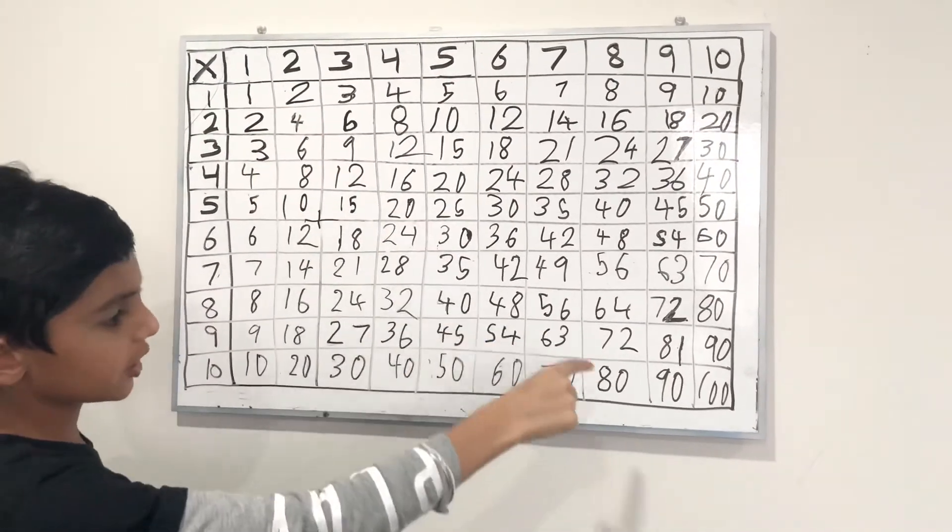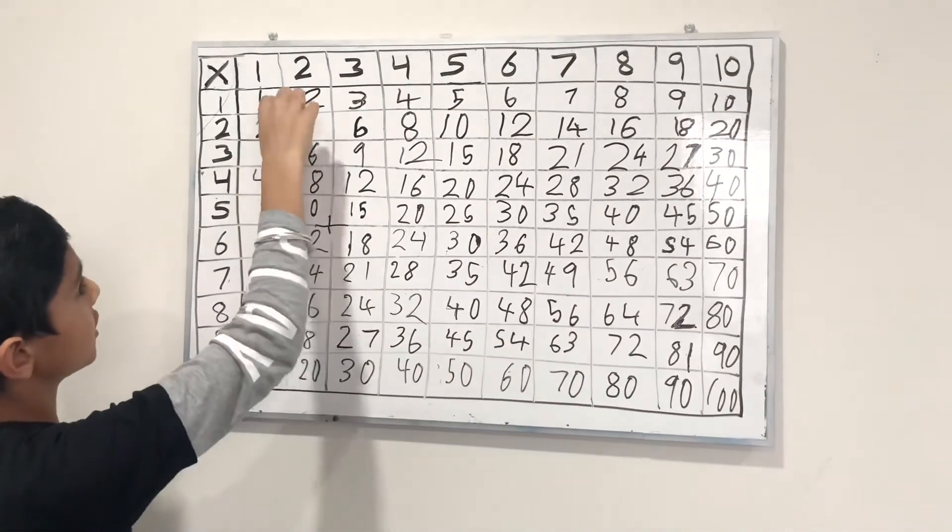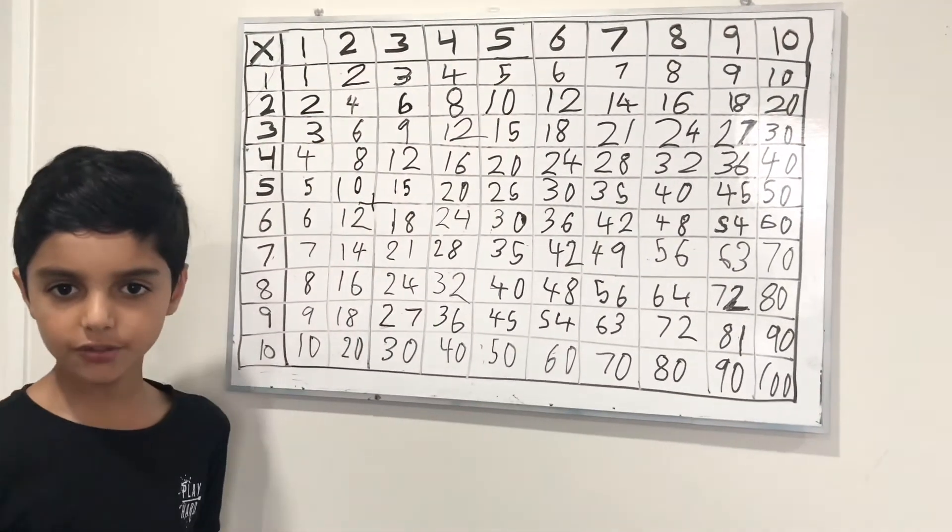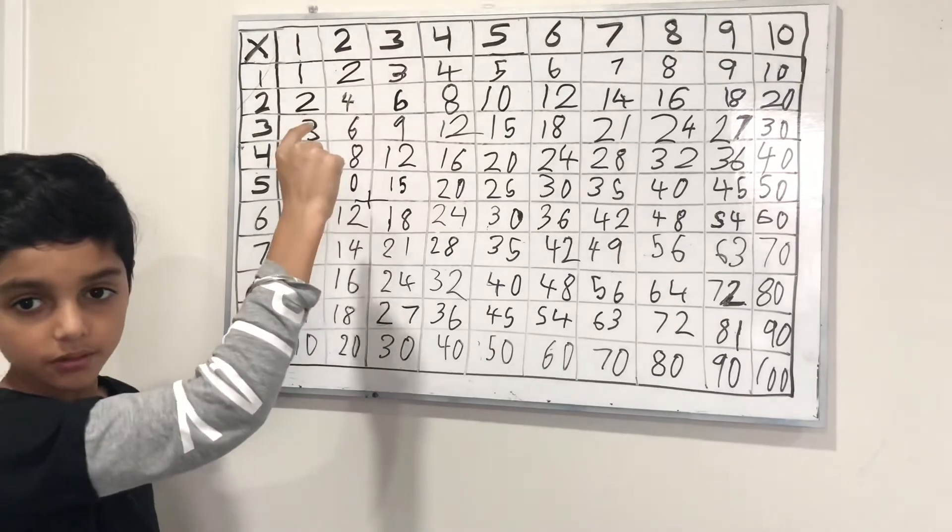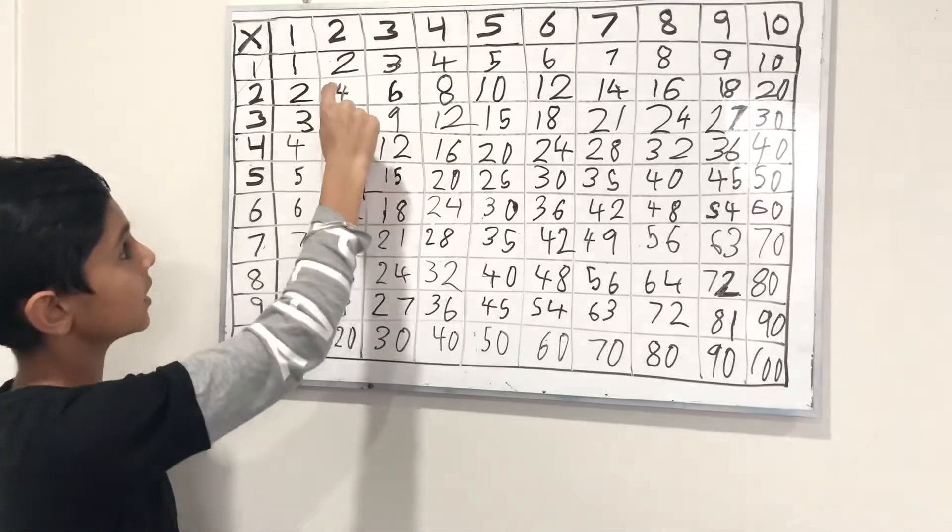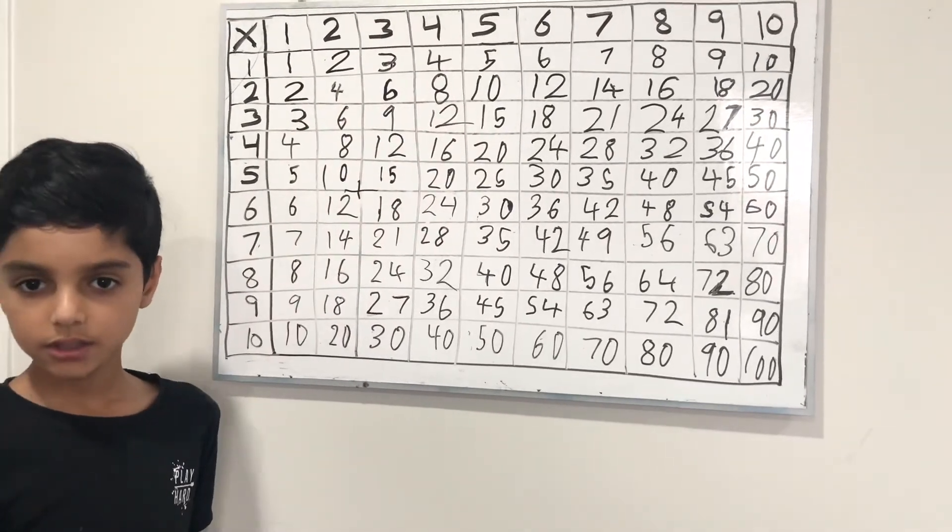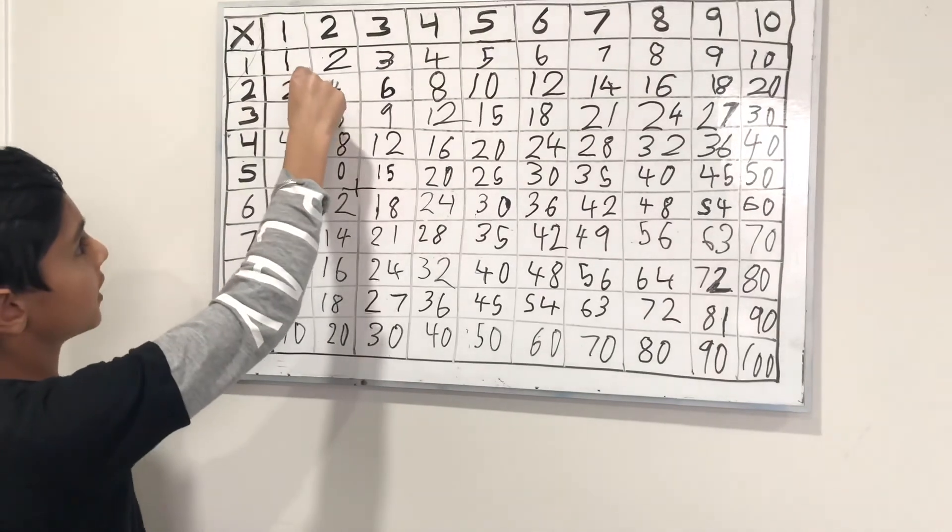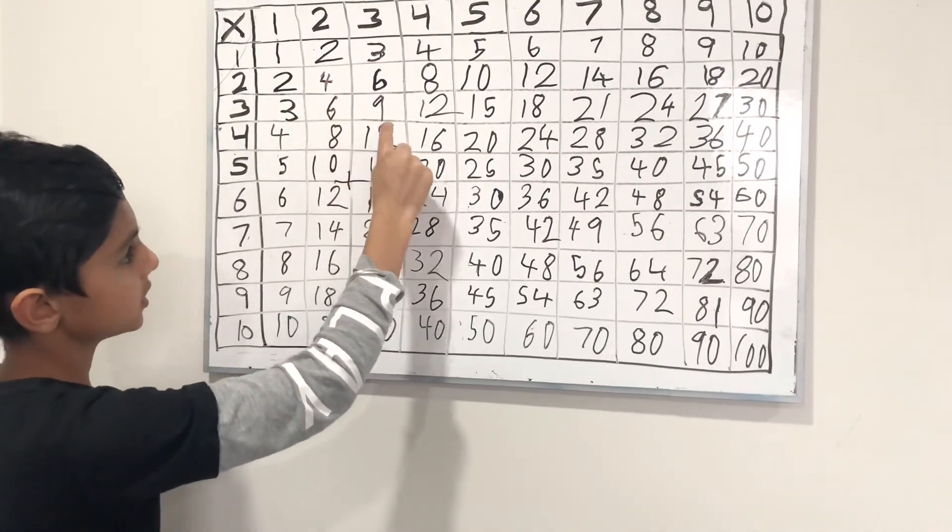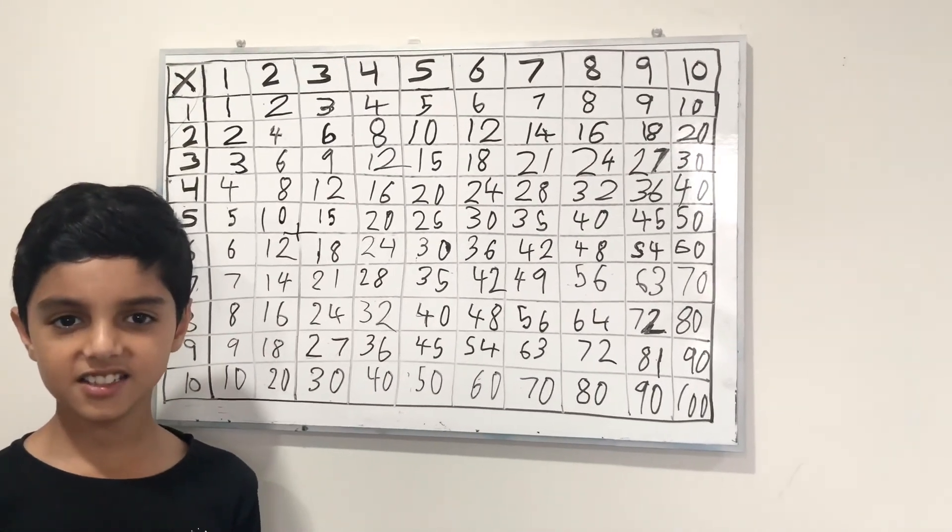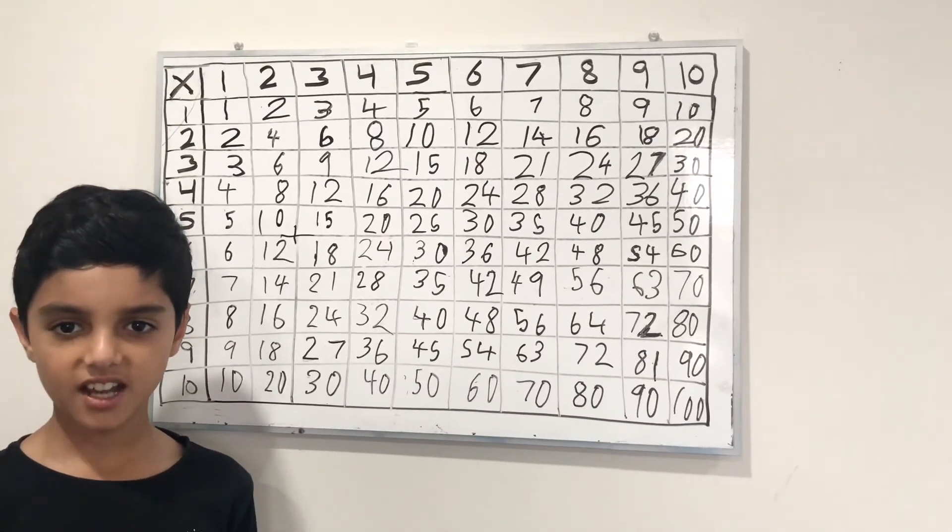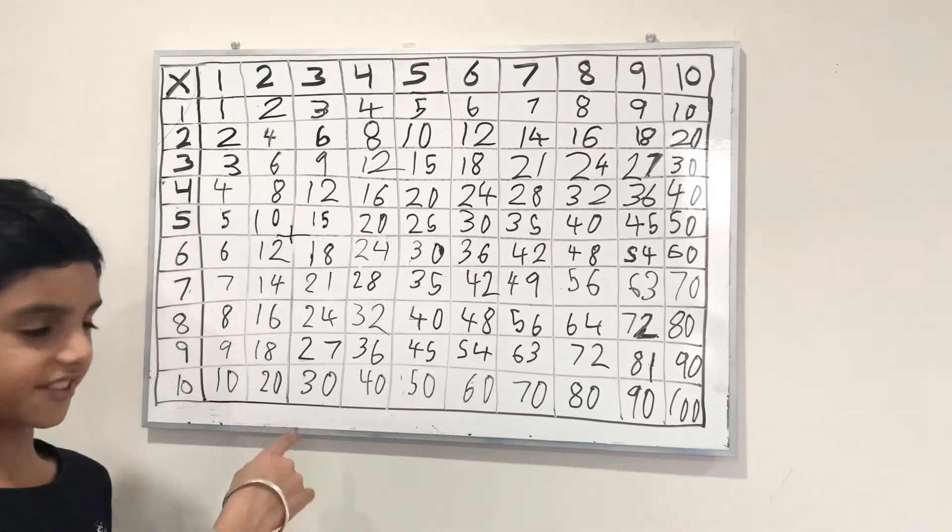And in all these numbers, there is a difference in this diagonal. If we subtract the smaller number from the bigger number, then you will find a pattern like 3, 5, 7, 9, 11, and so on. Let's give you a task. Can you try to identify other patterns in this grid?